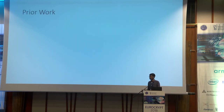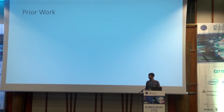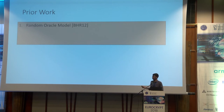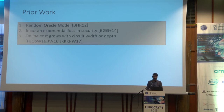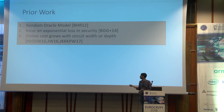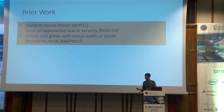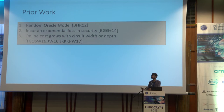Let me recall what is already known about adaptively secure garbling. We know several constructions from various cryptographic assumptions, and these can be classified into three categories: they are either in the random oracle model, or the security proof incurs an exponential loss, or the online cost grows with either the width or the depth of the circuit — where the security in the third case is just polynomial.